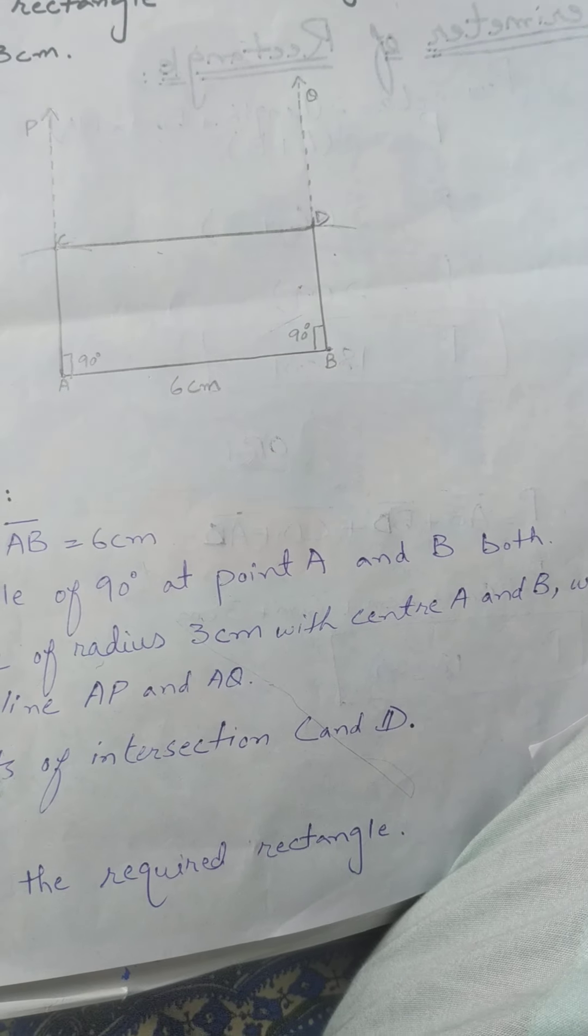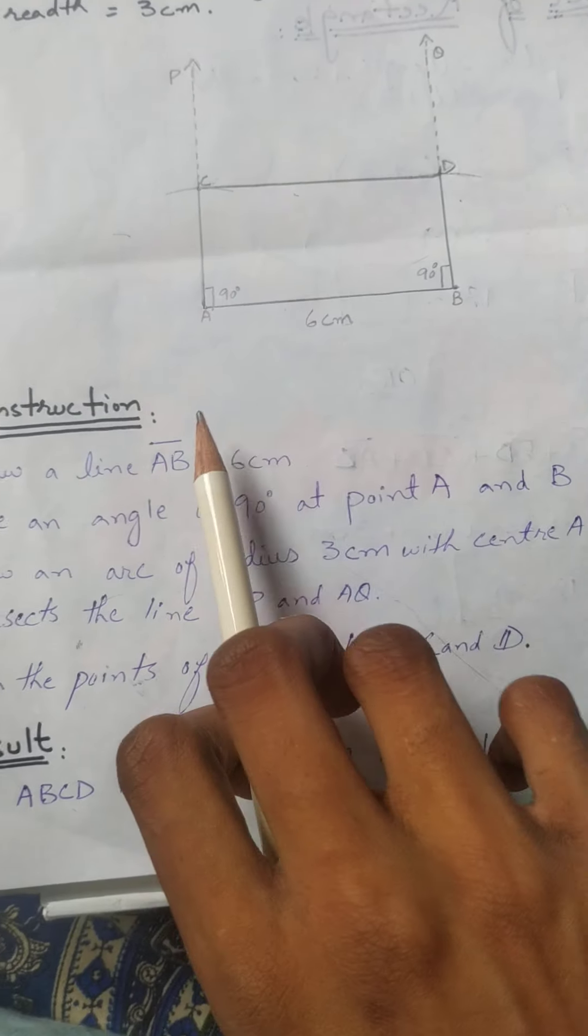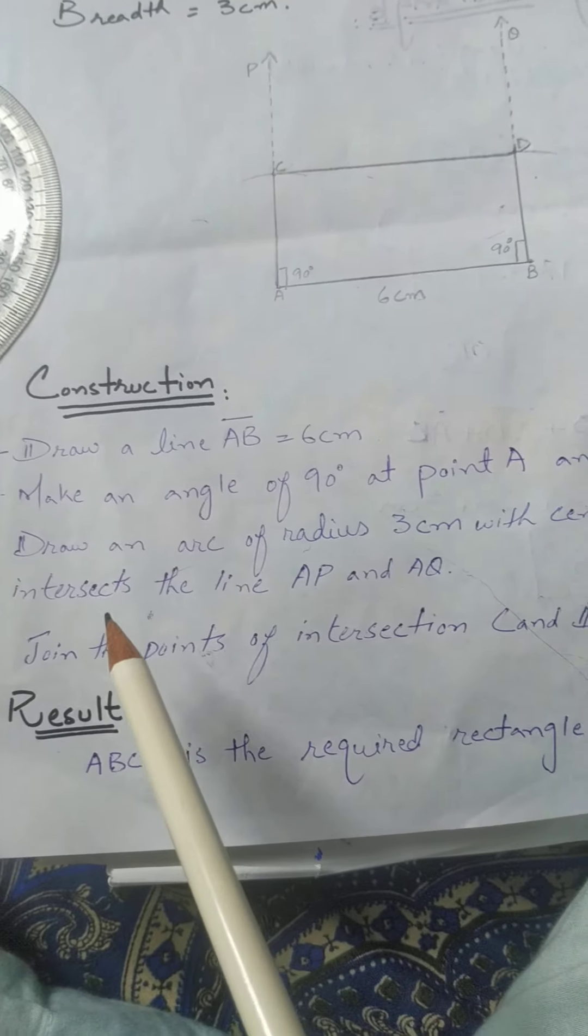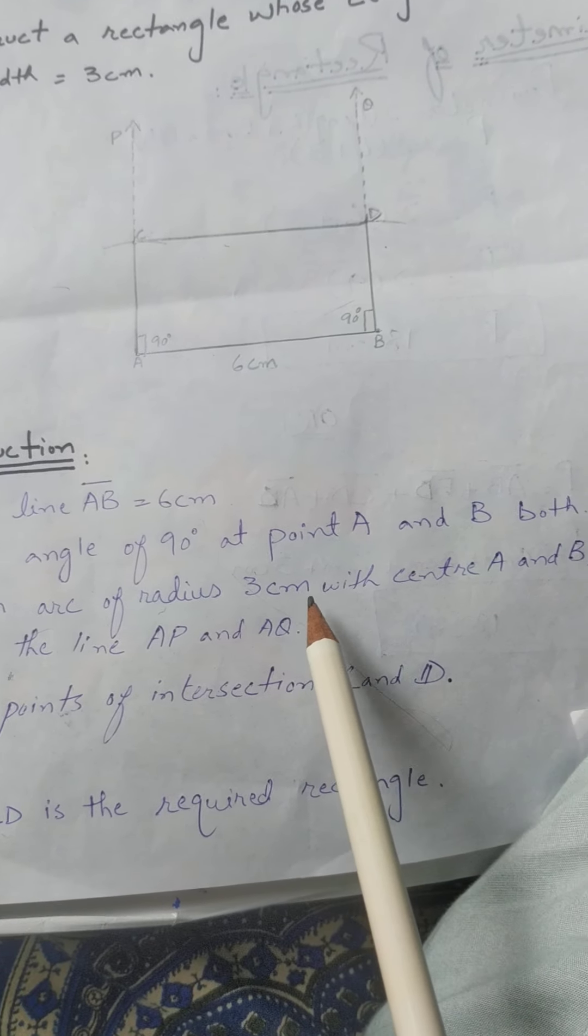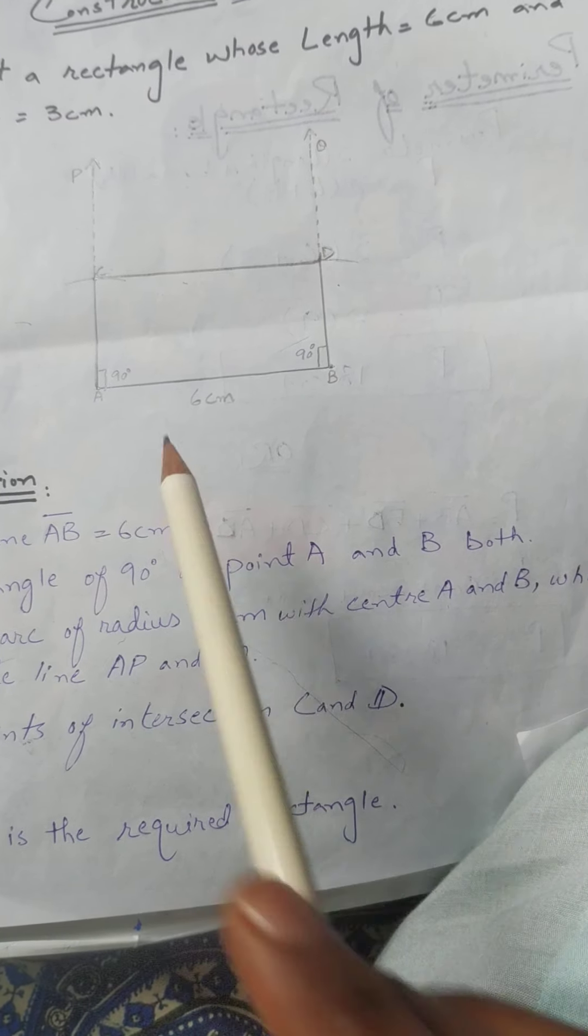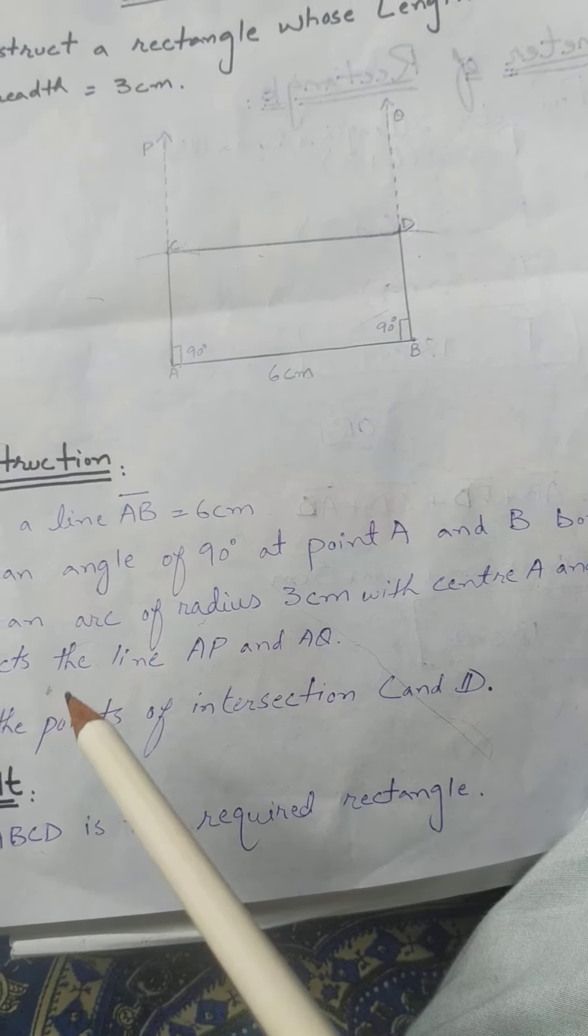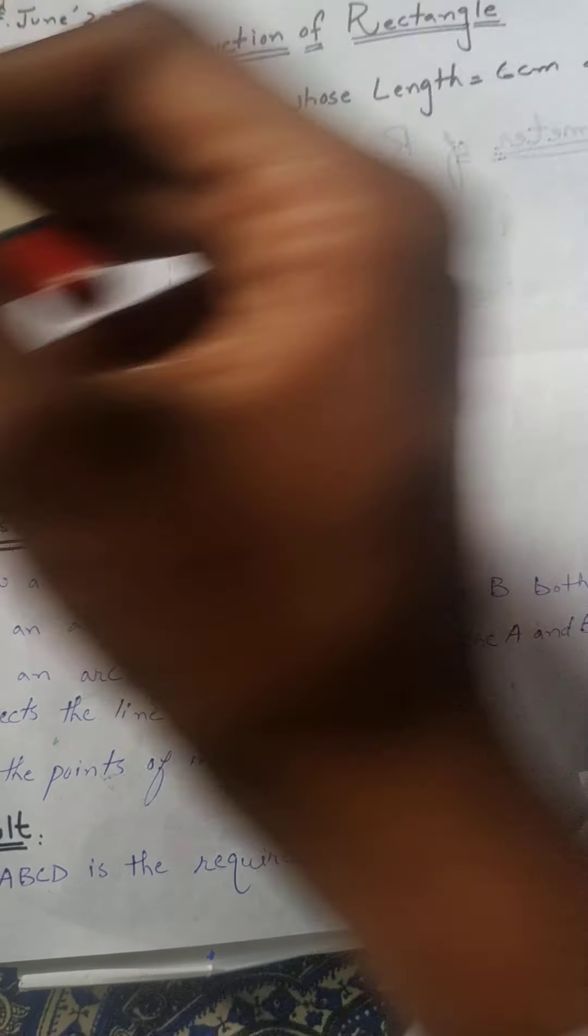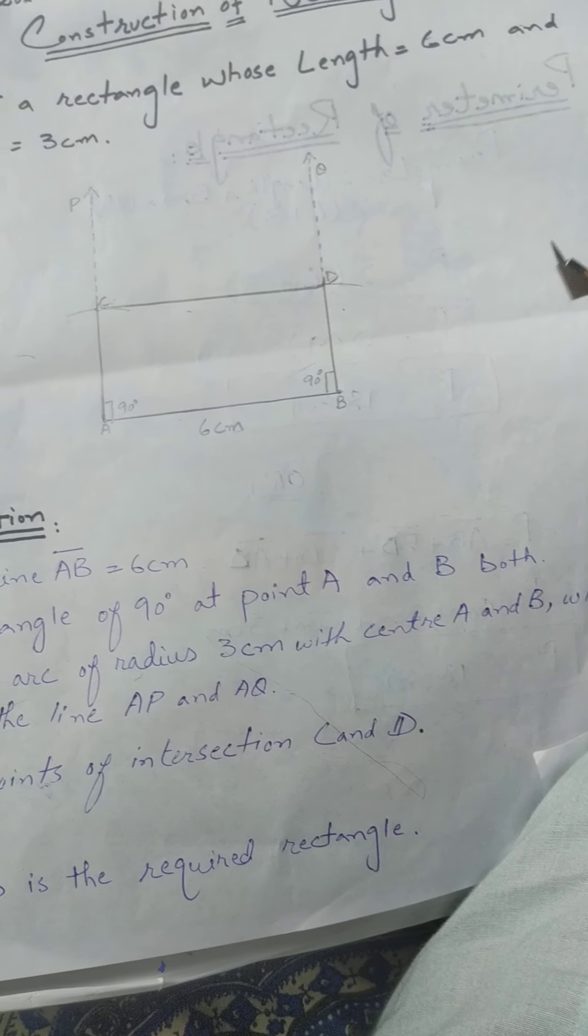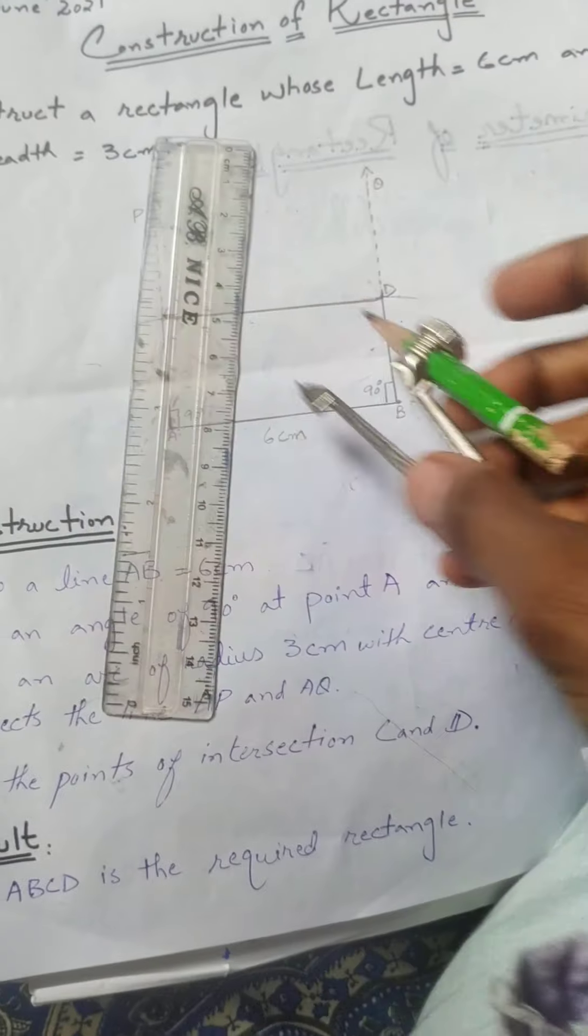The third step is to draw an arc of radius 3 cm with center A and B. These arcs will intersect the lines AP and BQ.